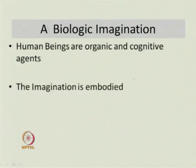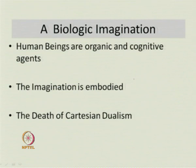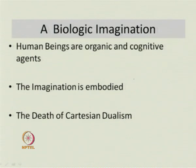We then call the imagination a biological imagination. Even imagination obviously emanates from the brain. Human beings are complex organic beings and cognitive agents. The imagination is embodied — it comes from the mind, from the brain, from the body. This successfully spells the final doom of Cartesian dualism. René Descartes, known as the first modern philosopher, gave us the famous statement cogito ergo sum — I think therefore I am — emphasizing reason. But cognitive science understands the mind as embodied, the mind as coming from the brain and the body, sounding the death knell of Cartesian dualism.